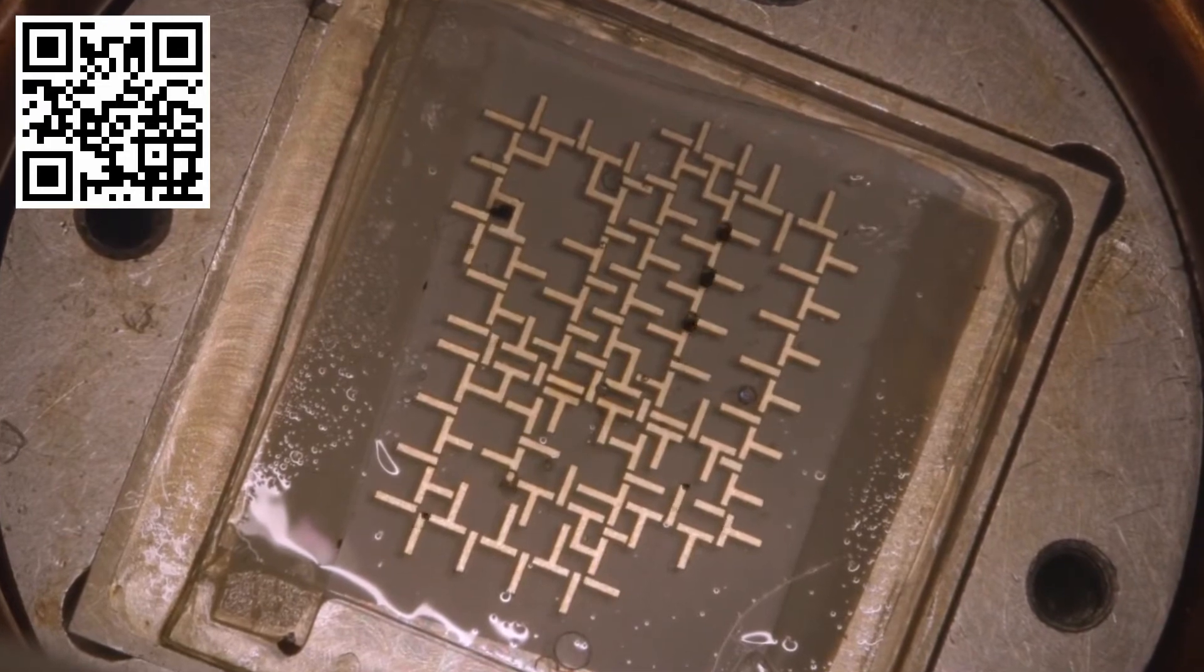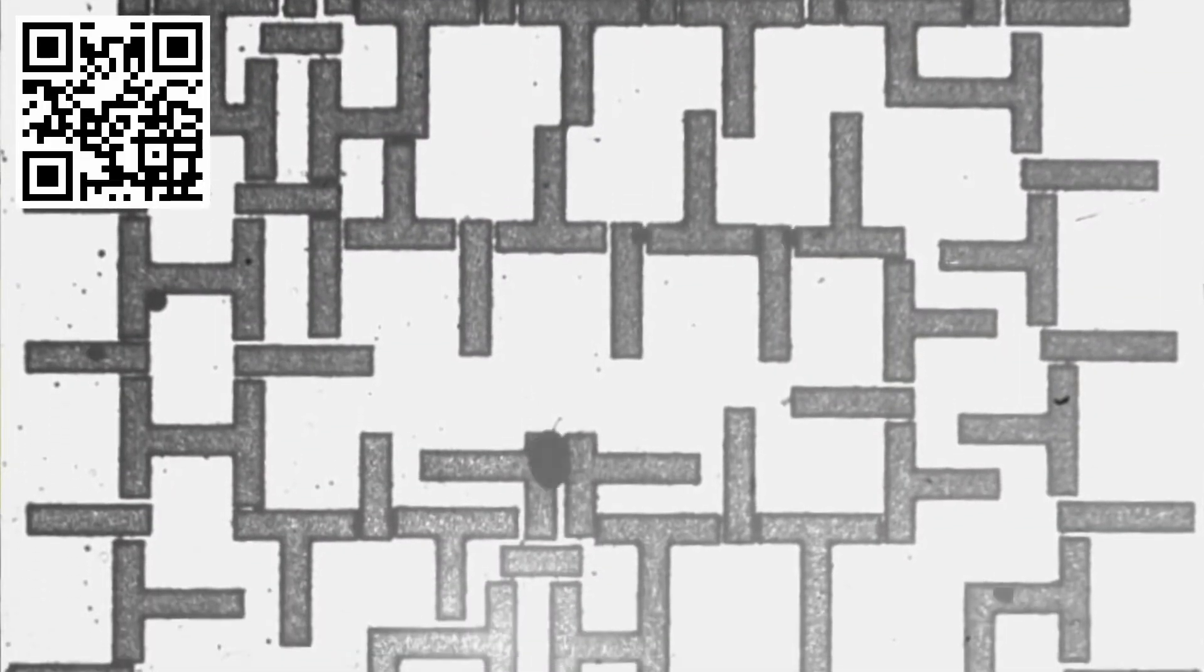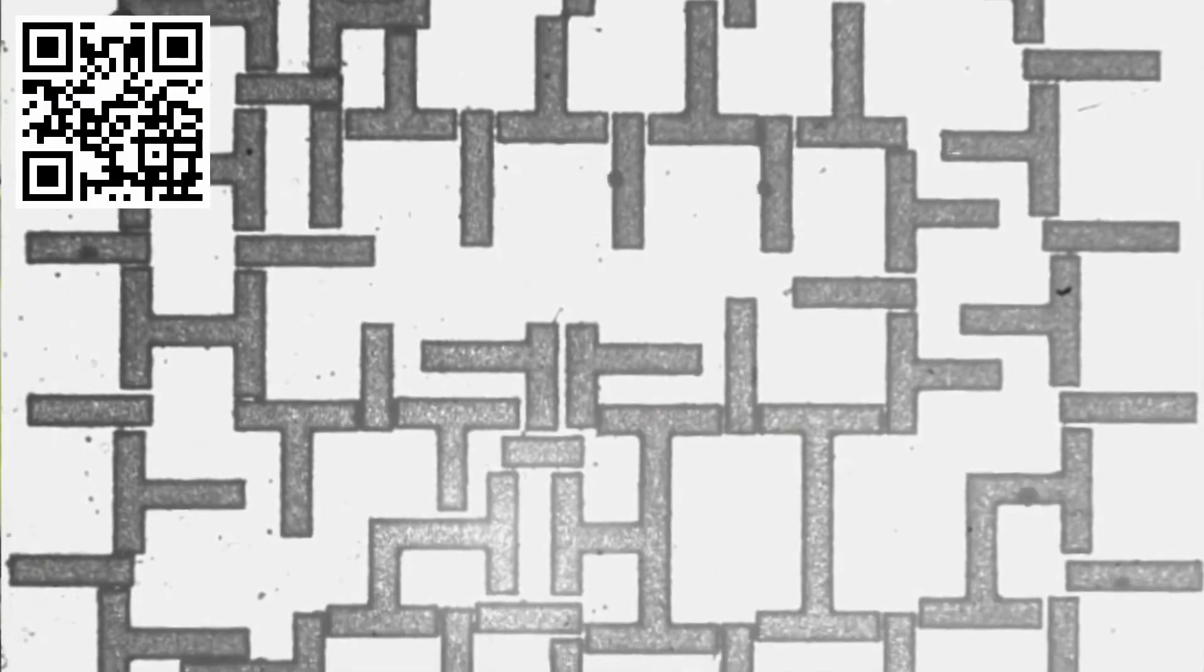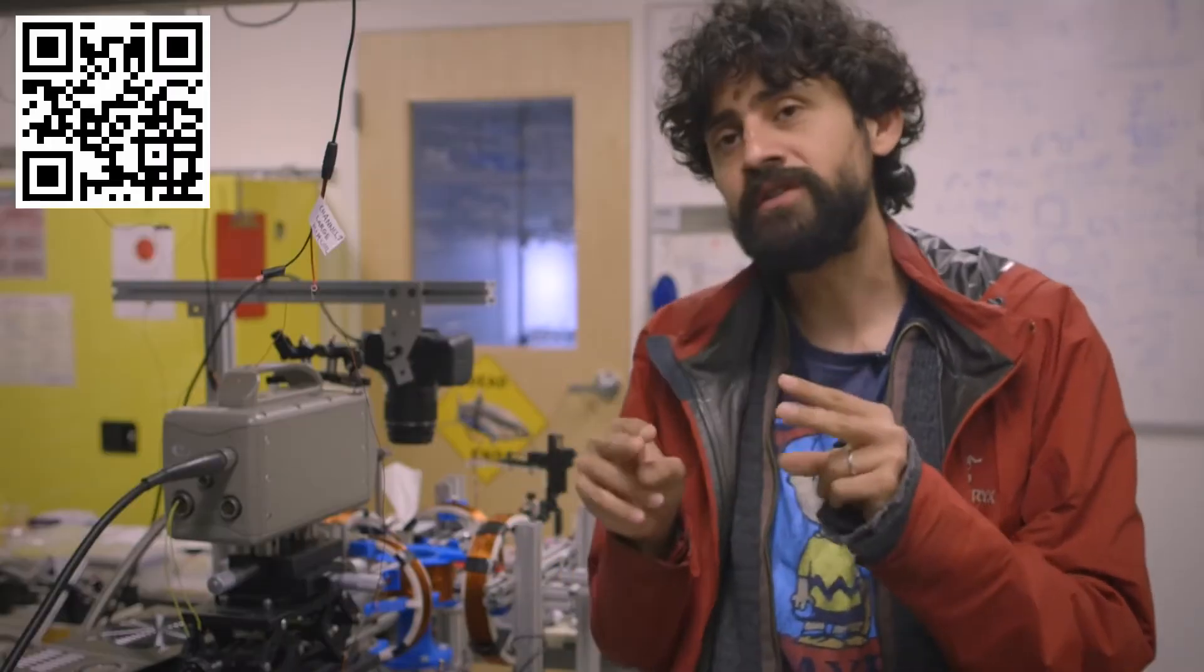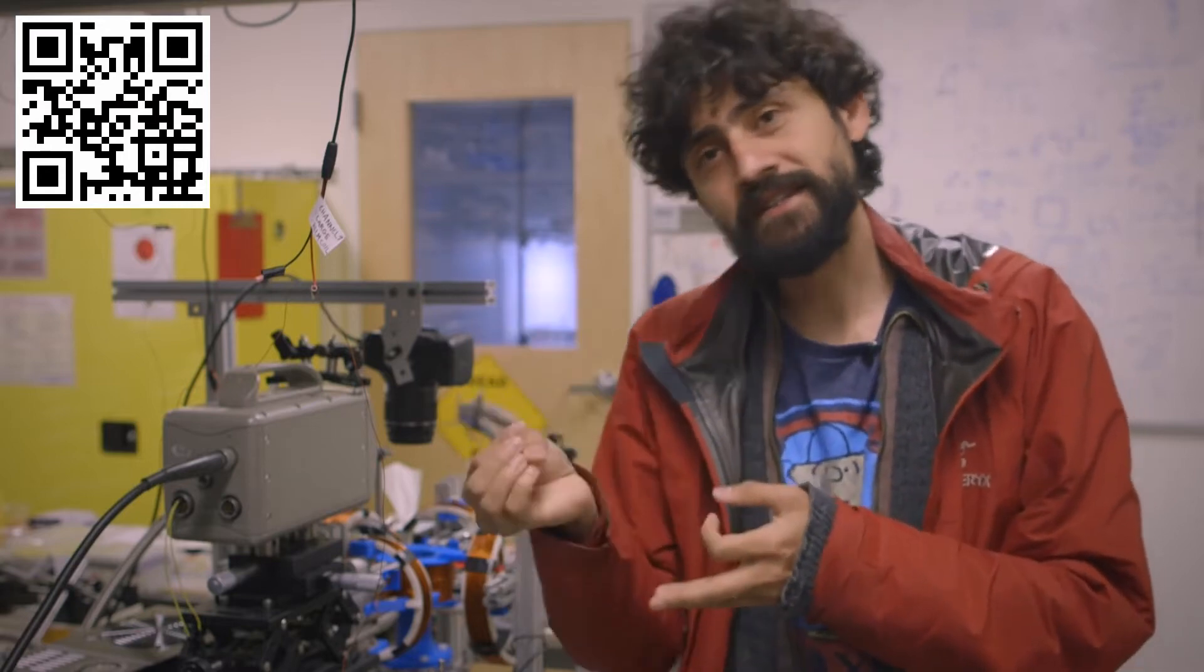All the way from a Jacquard loom to the Babbage machines to the very early electronic computers, the fundamentals have been about manipulation of information. Computation and computers are bound by laws of physics, primarily because bits are physical entities.